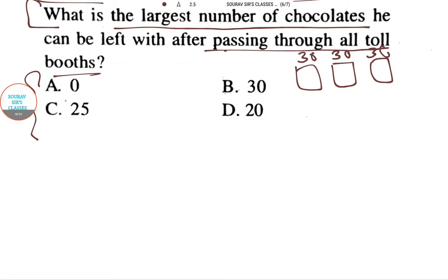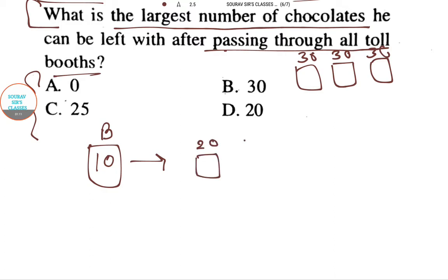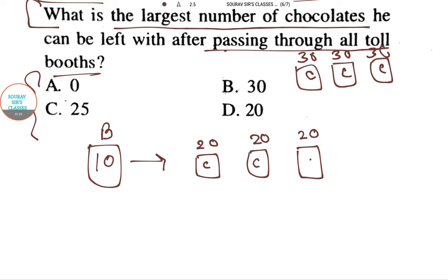After crossing 10 toll booths, the salesman will have 20 chocolates in each box — so 20 chocolates in each of his three boxes.